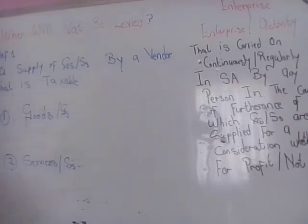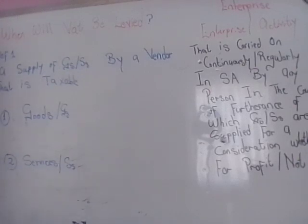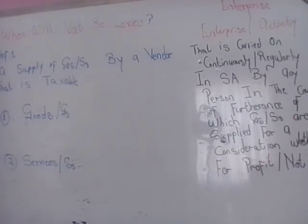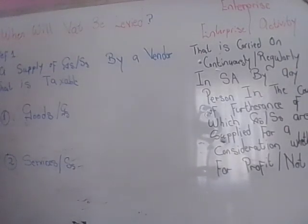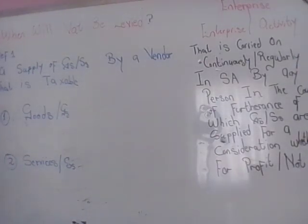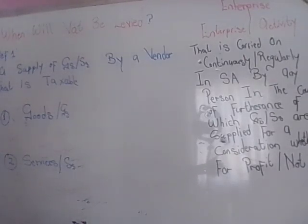Let's start with what a supply is. A supply is a situation where you're basically supplying something to someone — you need two parties. So if you're in the business of selling apples and you are a vendor, when I come to you and buy an apple, you've just supplied me with an apple. A supply can also be something you do not necessarily see — it can be in the form of a service.